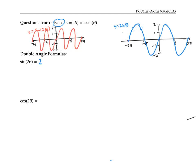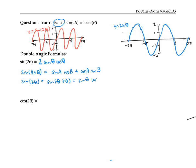That formula is: sine of two theta equals two sine theta cosine theta. It's not hard to see why that formula works based on the angle sum formula. Recall that sine of a plus b equals sine a cosine b plus cosine a sine b. Therefore, sine of two theta, which is sine of theta plus theta, equals sine theta cosine theta plus cosine theta sine theta, simply by plugging in theta for a and theta for b. Since sine theta cosine theta equals cosine theta sine theta, we can rewrite this as twice sine theta cosine theta.